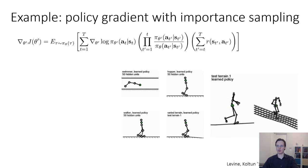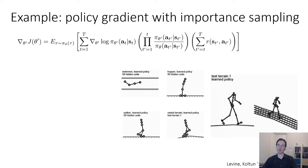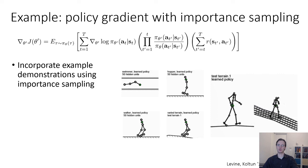This is a paper actually by myself and Vladdan Colton from 2013 that used an off-policy version of policy gradient to incorporate examples. So here, example demonstrations were incorporated using importance sampling, but unlike imitation learning, the policy wasn't just trying to copy the examples, it was actually trying to do better than those examples by using policy gradients. And this used neural network policies for some locomotion tasks.